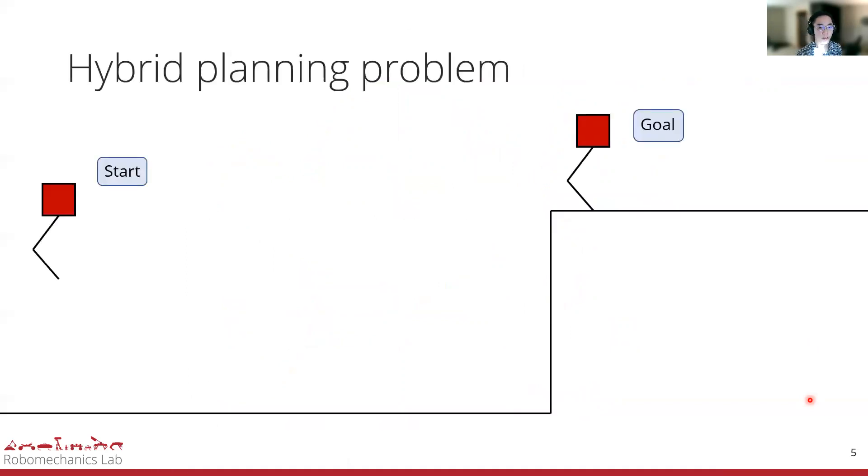So, how does this change when we have a hybrid dynamical system? The general problem setup is the same where we have some start state and a desired goal state. We still want to find the states and inputs that minimize some costs. However, now the dynamics can change along the trajectory. In this case, the jumping robot has drastically different dynamics while it's in the air than on the ground.